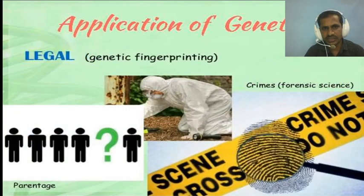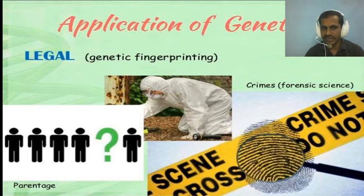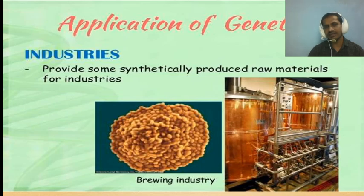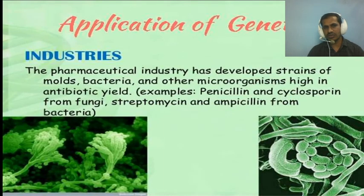Genetics is applicable in forensic science through genetic fingerprinting, used in crime investigation and paternity testing. In industry, genetics can synthetically produce raw materials for the brewing and baking industries. Pharmaceutical industries can develop strains of molds, bacteria, and microorganisms for high antibiotic yield, for example penicillin and cyclosporine.